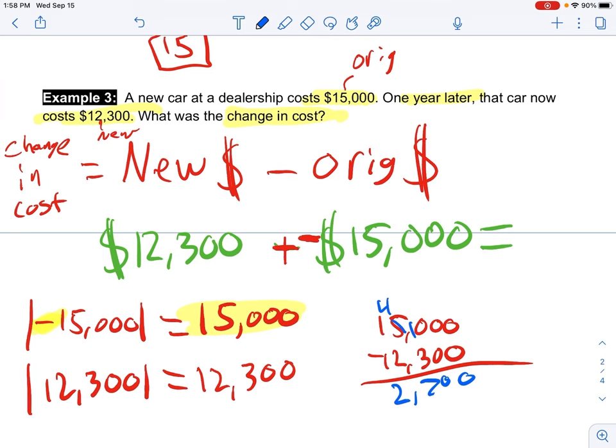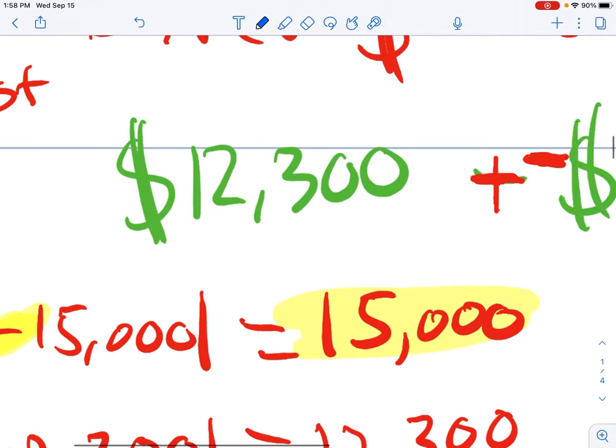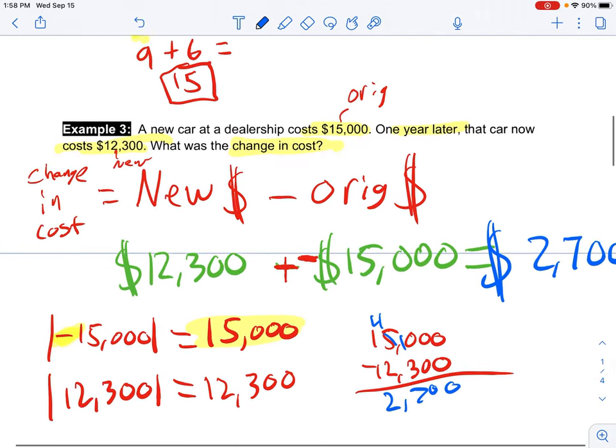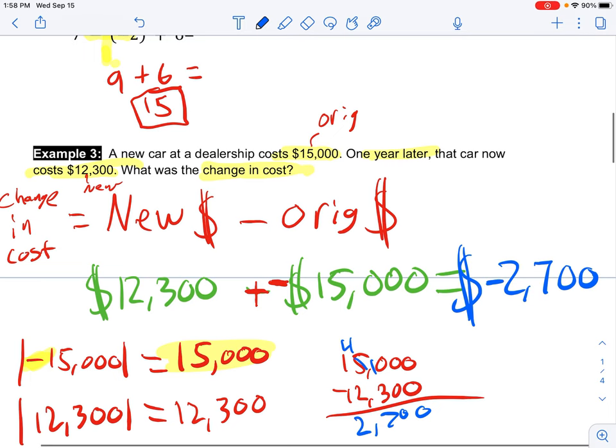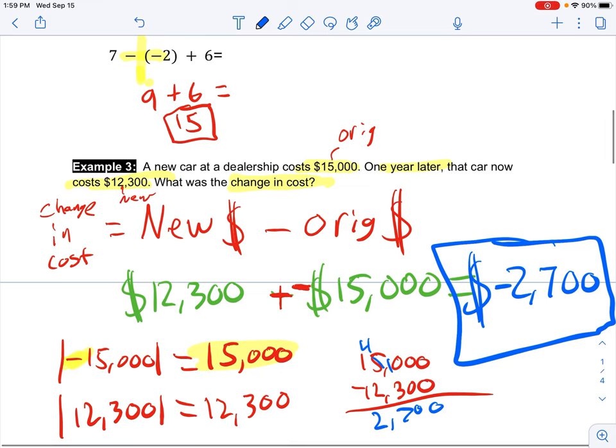So I'm going to say $2,700. But because my absolute value was negative, my $15,000 is more negative, this answer is also going to be negative. And that makes sense, because the car is worth less money. That's a life lesson. As soon as you buy a car and you drive it, you buy a new car, you drive it off the dealership, that car is now considered used, and it is not worth as much. So that's called depreciation. You don't necessarily need to know that, but if you're thinking about being an accountant, that could be a depreciating asset.